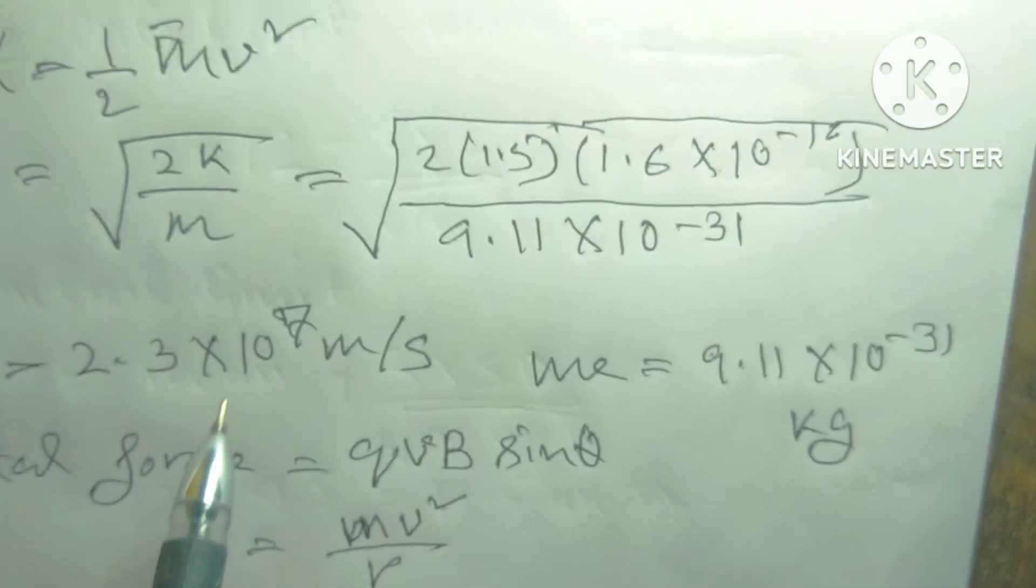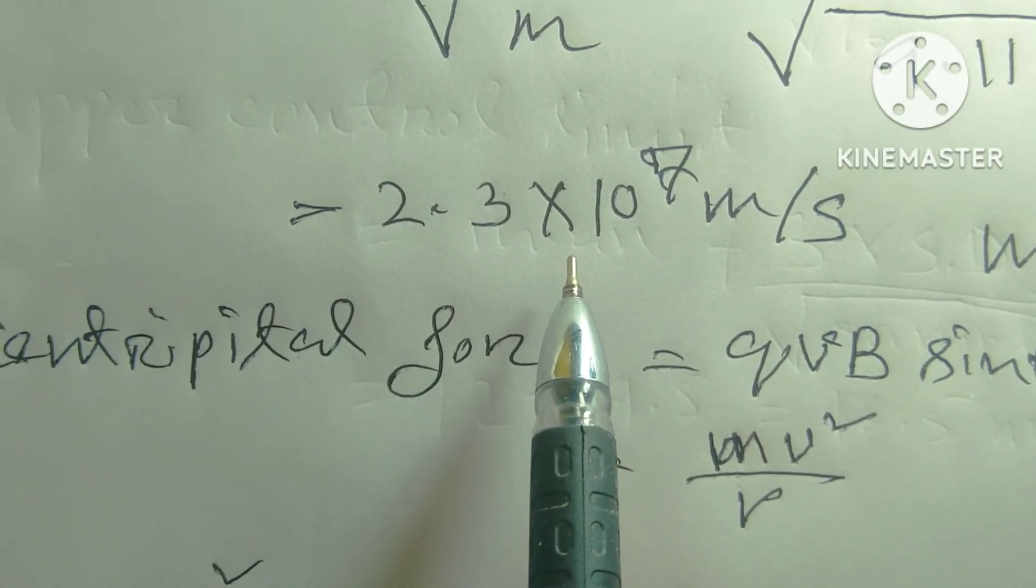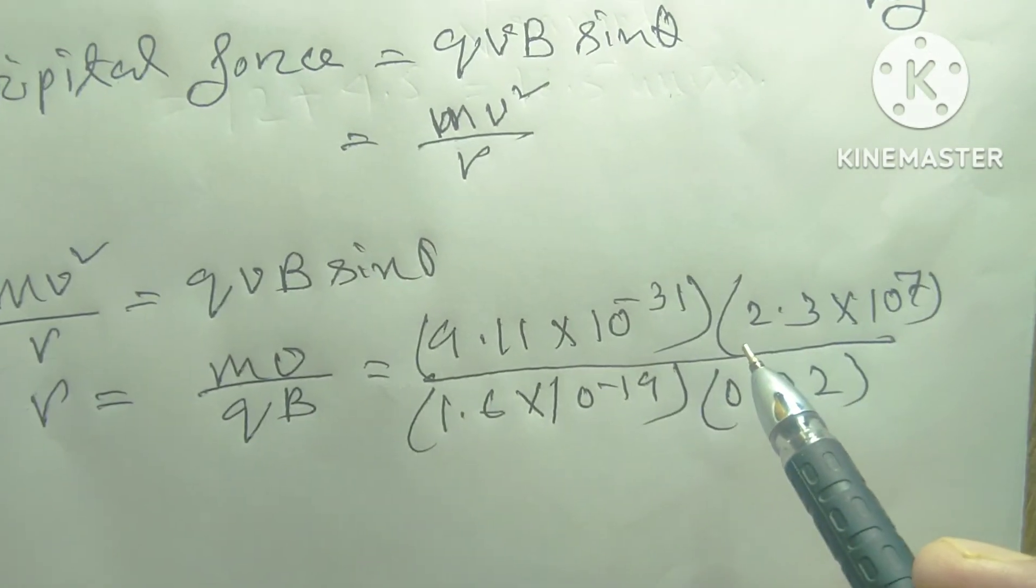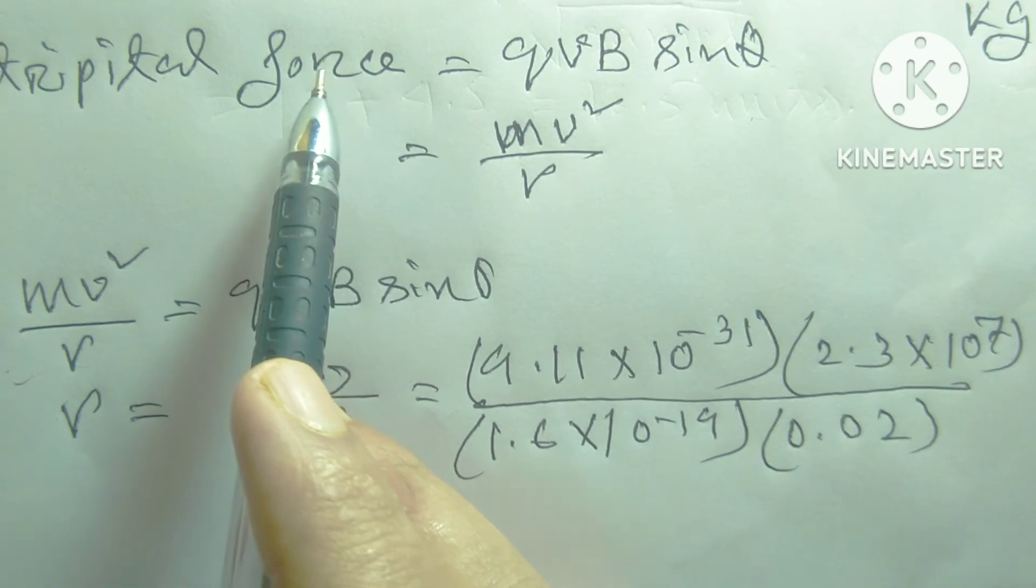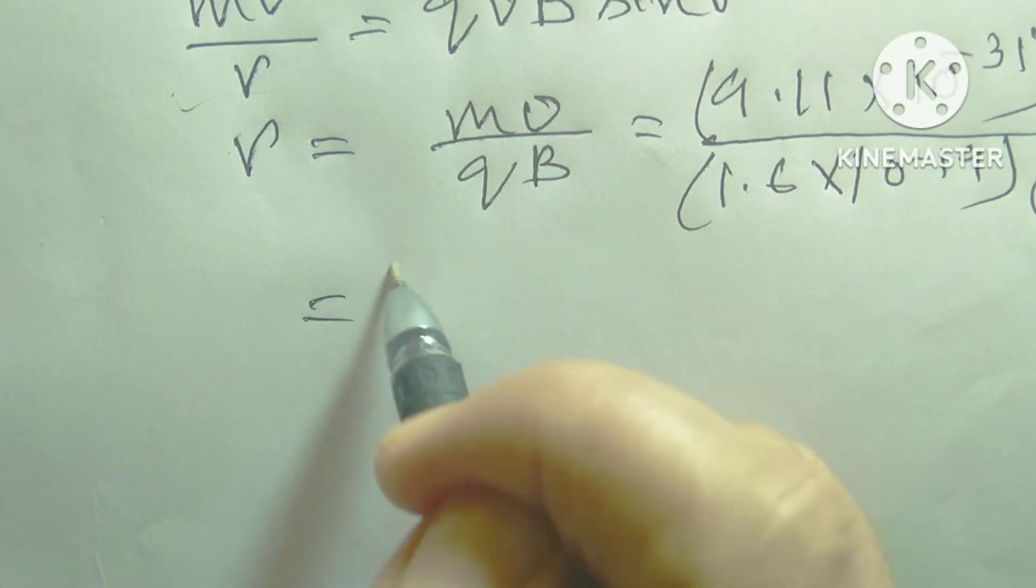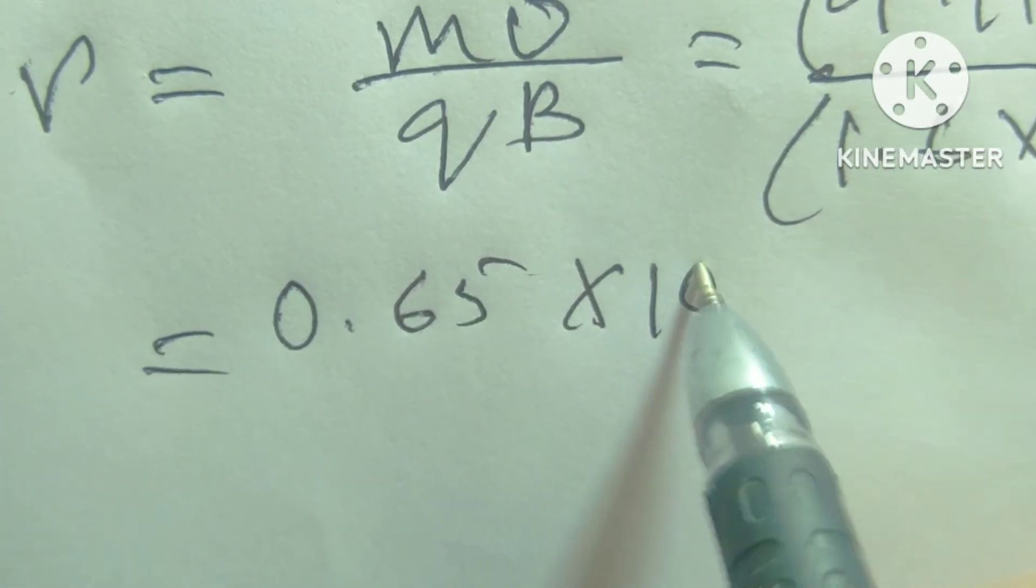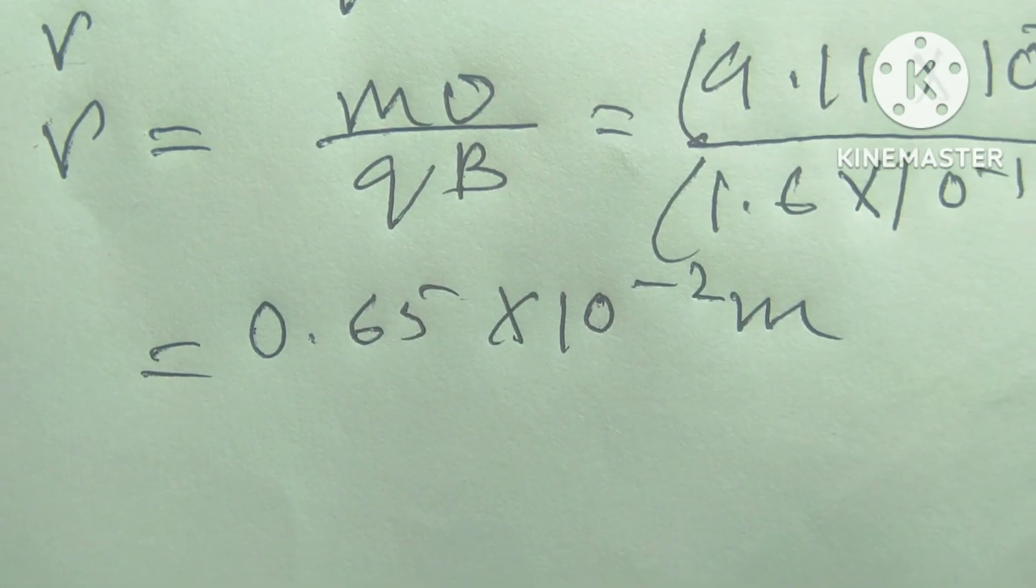So friends I have already found the V value, so R equals 0.65 into 10 to the power minus 2 meter. Thanks for watching.